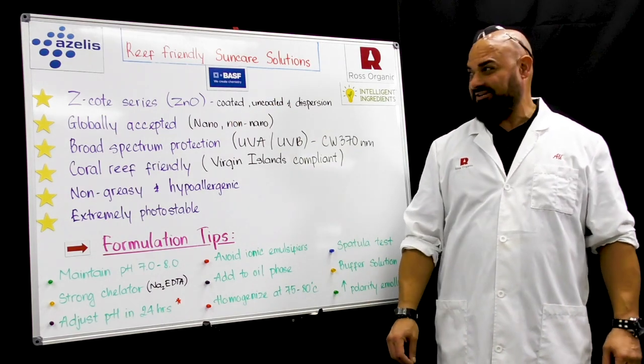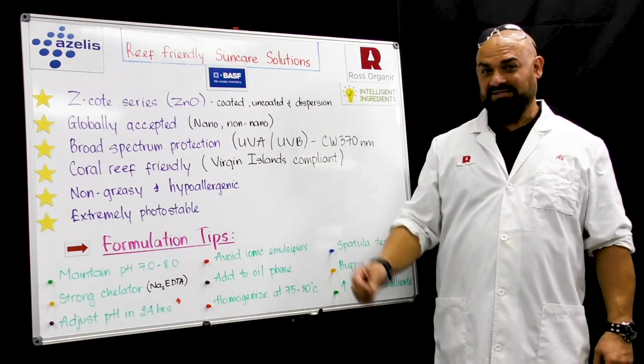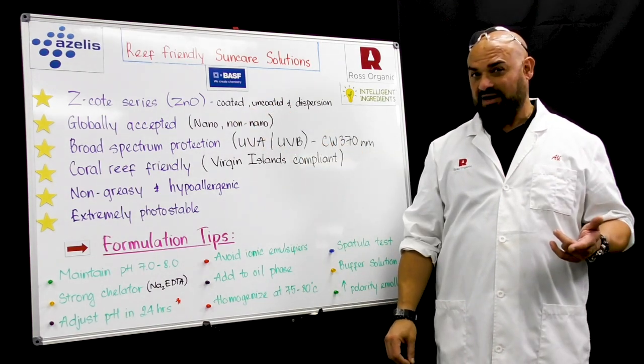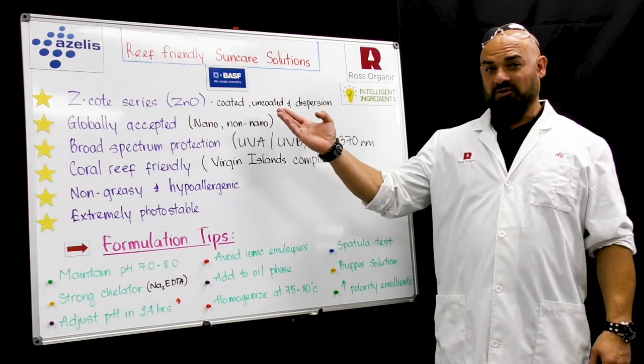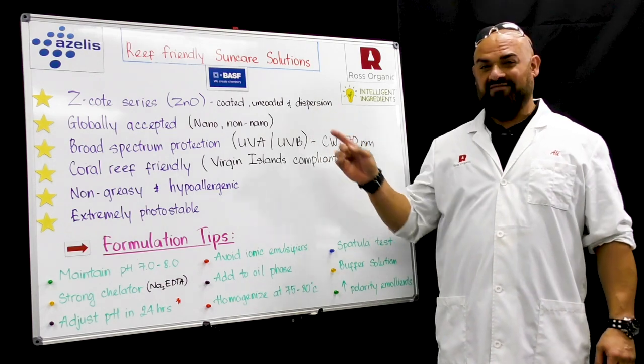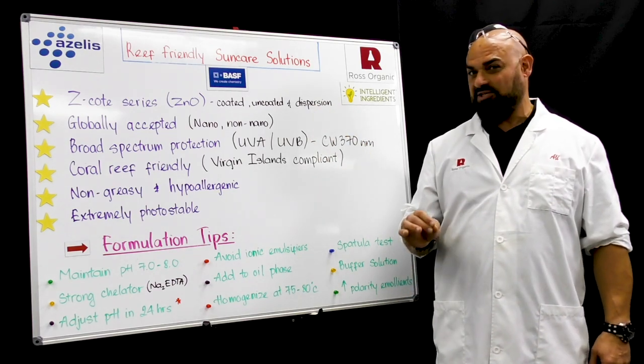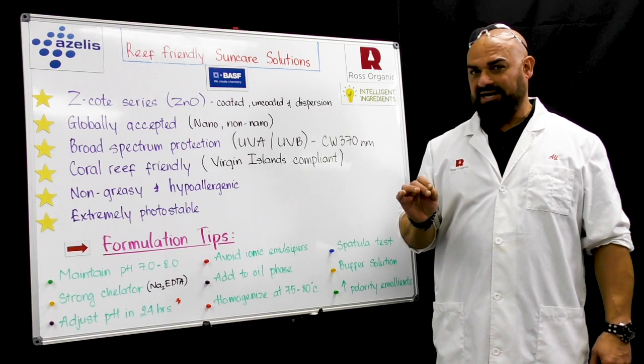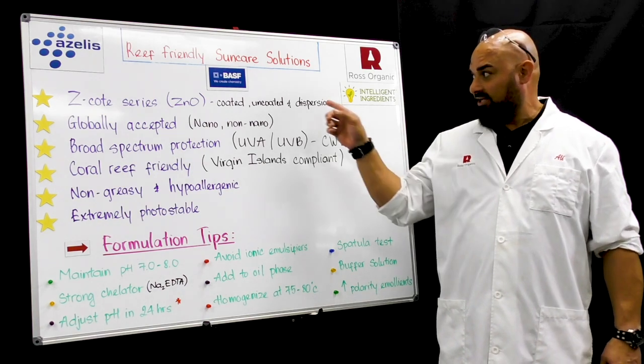BASF offers the Z-Coat Series. Zinc oxide, it's either coated—that's triethoxycaprylylsilane—uncoated, which is great for 100% natural formulations and baby diaper rash, and now we have a dispersion. This is a 70% dispersion, very minimal whitening, non-nano dispersion. So it's very easy to work with.